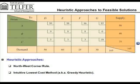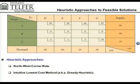Before we find the optimum solution, I'm going to show you two heuristic approaches or manual procedures to find a feasible solution. It's not the optimum solution, but a feasible starting point in case you don't have access to Excel Solver or other tools. Two procedures I'm going to demonstrate are the Northwest Corner Rule and the Intuitive Lowest Cost Method, also sometimes referred to as the greedy heuristic because you're trying to save as much as possible.